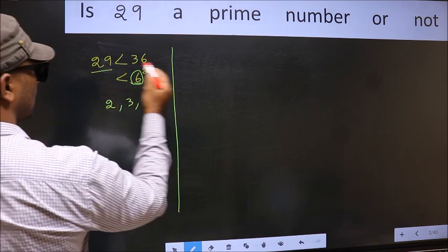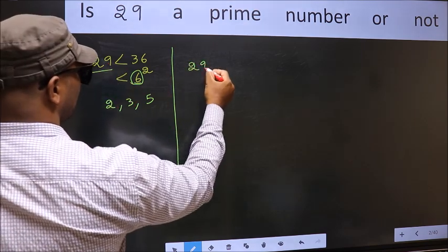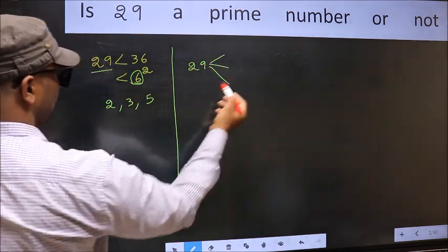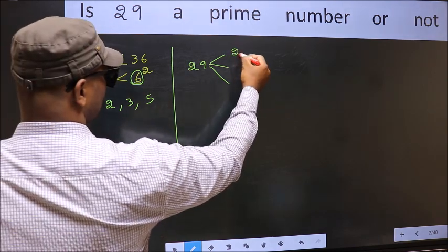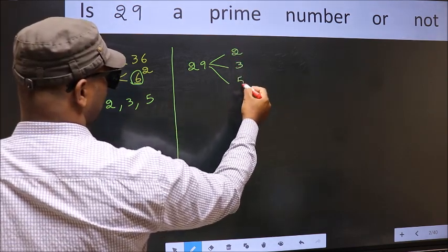Now, for this number, we should check divisibility by these numbers. That is 2, 3 and 5.